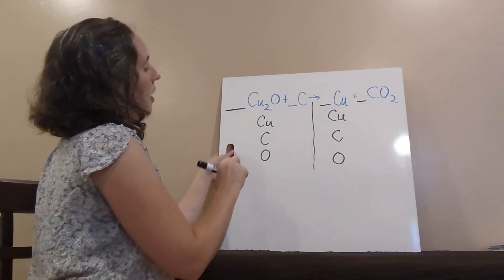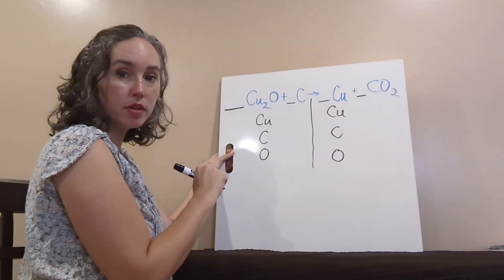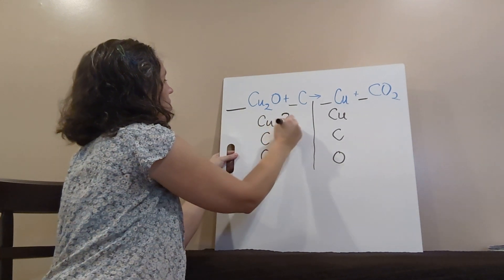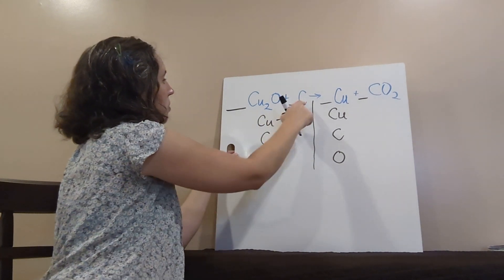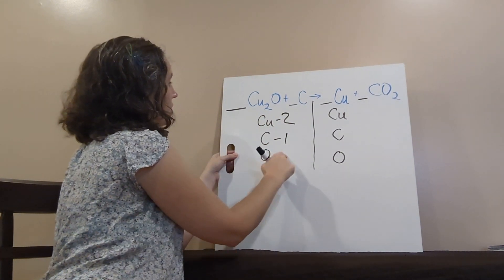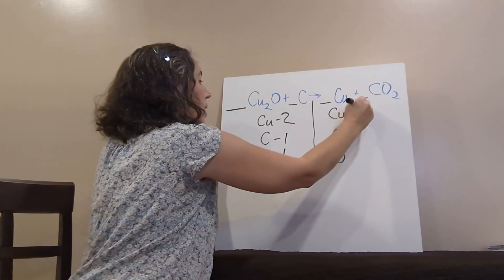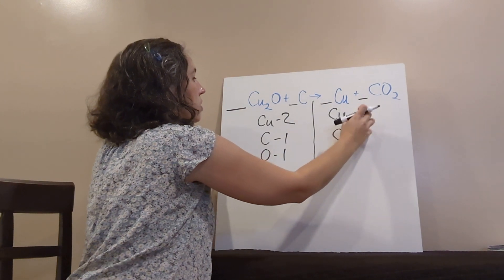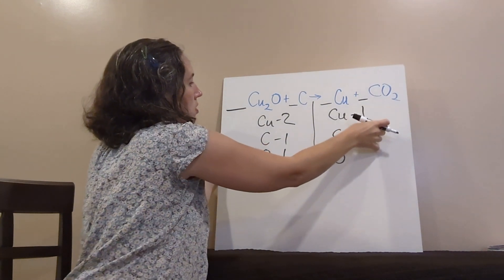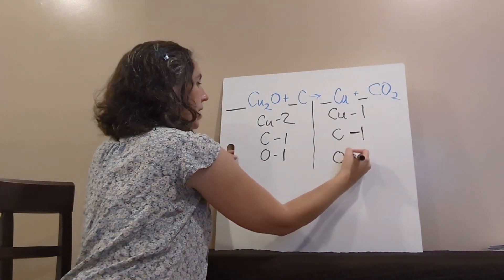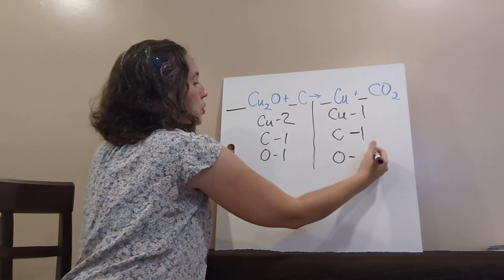Now, let's count. How many coppers are on this side? I've got two, because of the subscript, carbons one, oxygens one. This side, I've got one copper, not negative one, that's impossible. One carbon, and my oxygens, I've got two of those.